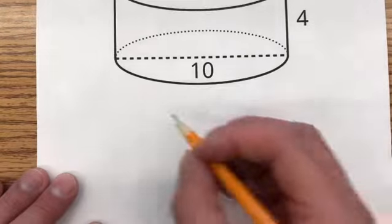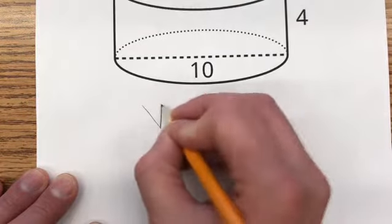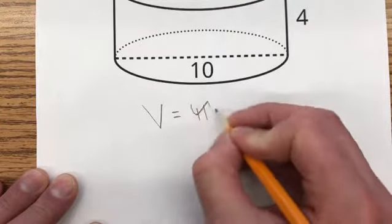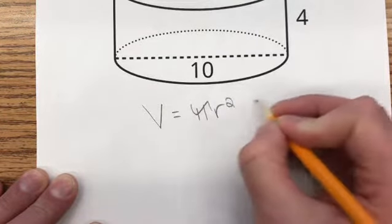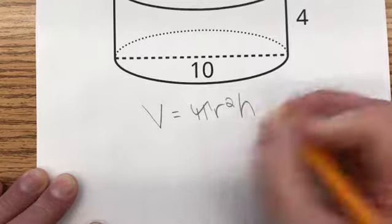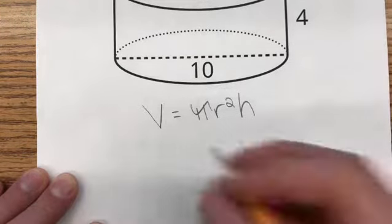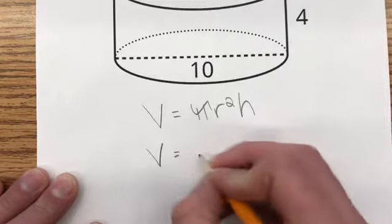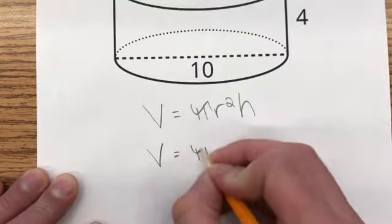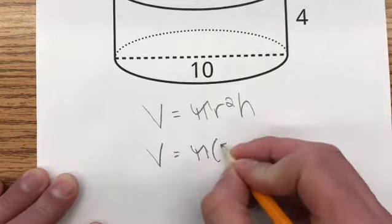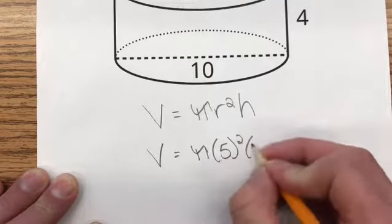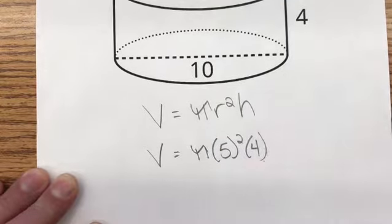My formula for volume is V equals pi, R for radius, squared, H for height. I'm going to plug in pi, 5 squared, and 4 for height.